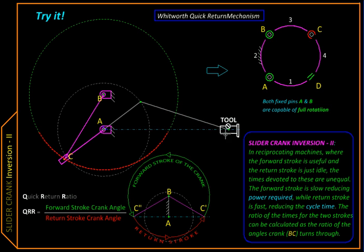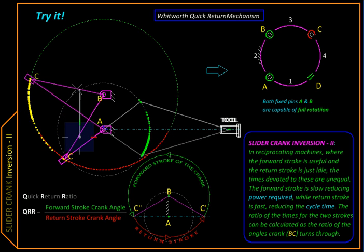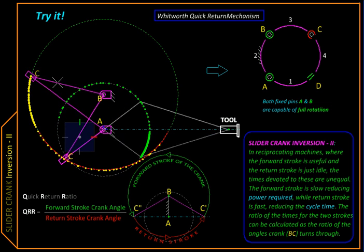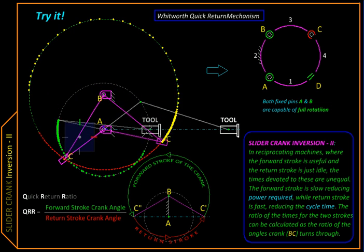At the end of it, we will attach a tool which is constrained to reciprocate along this line. So as our input link BC rotates, the tool reciprocates back and forth. Now let us see its extreme positions.